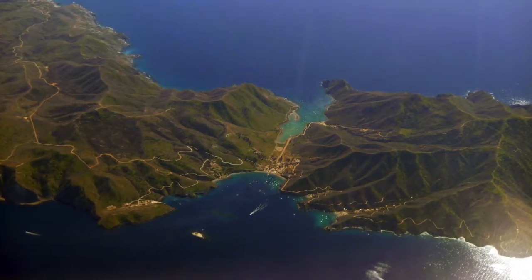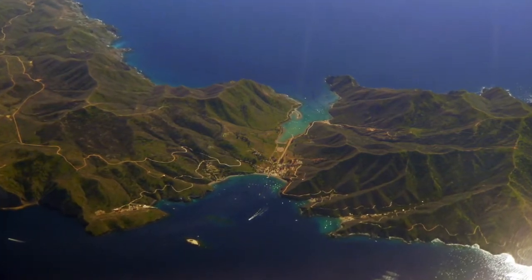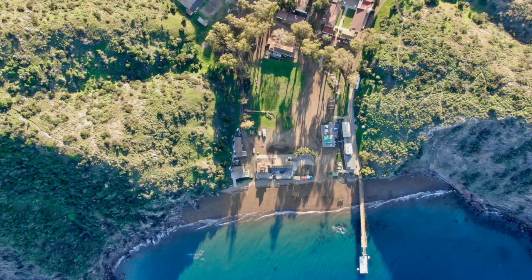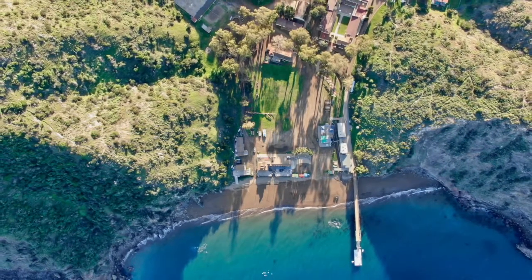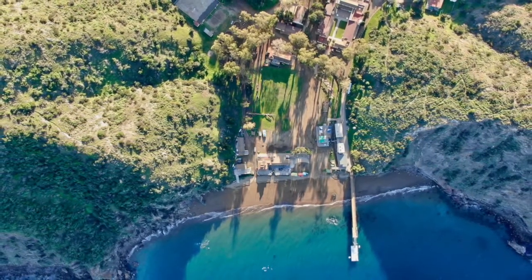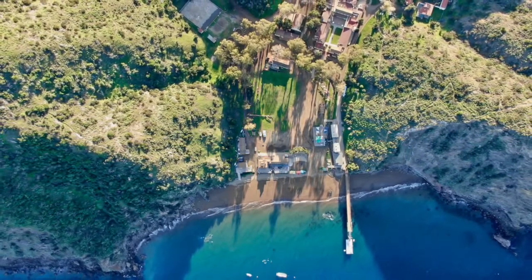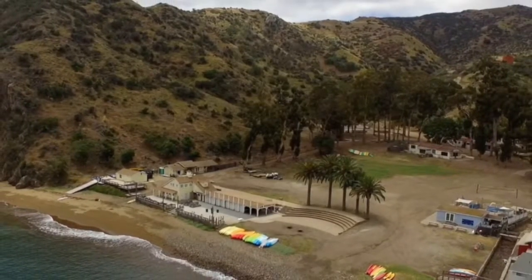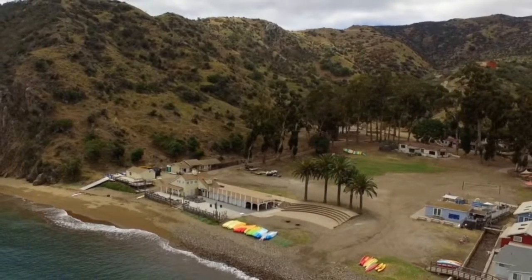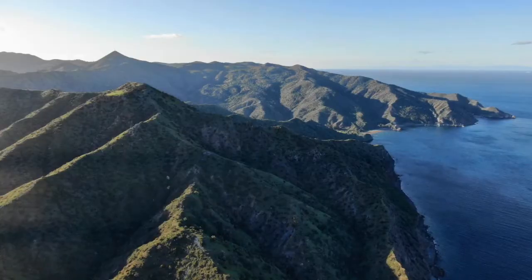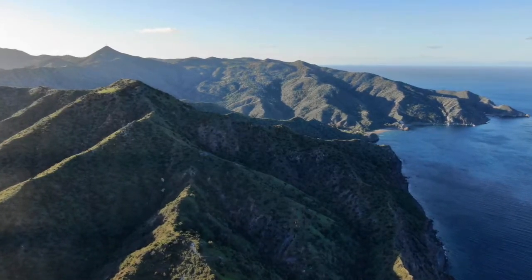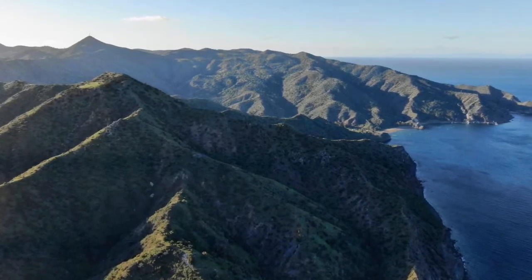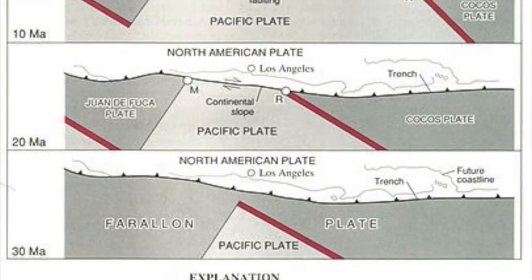Catalina Island was formed by the subduction of the ancient Farallon tectonic plate below the continental North American plate. Very little of this ancient plate exists today. Catalina Island is a rare example of Farallon rock which, when subducted under the North American plate, goes under intense pressure and volcanic heat. The volcanic activity expelled from the metamorphic schist to form basal layers of rock on the island.